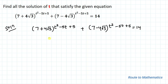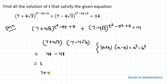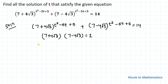One thing to note is that if we multiply (7 + 4√3) with (7 - 4√3), we can apply the algebraic identity (a + b)(a - b) = a² - b², where a = 7 and b = 4√3. So we get 49 - 48 = 1. This means (7 + 4√3)(7 - 4√3) = 1, which implies (7 - 4√3) = 1/(7 + 4√3).